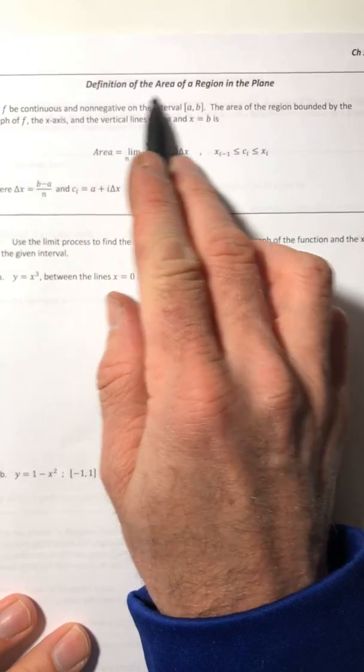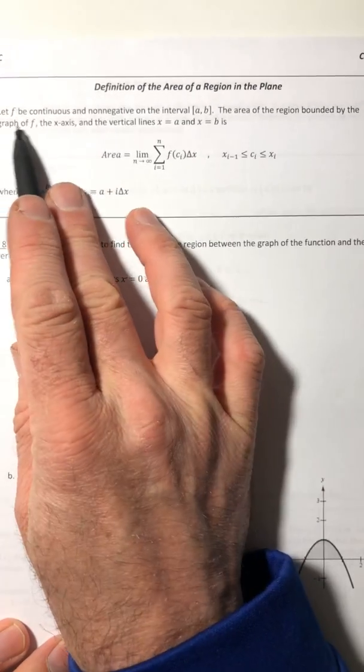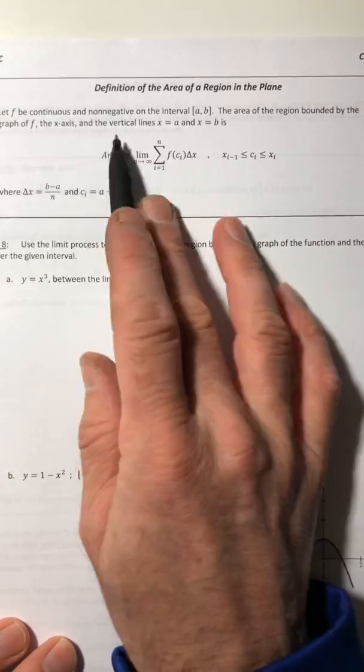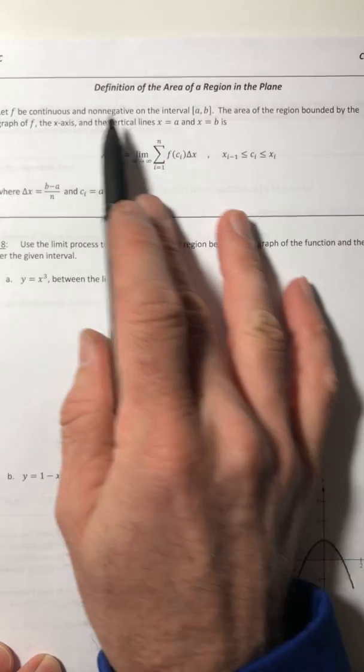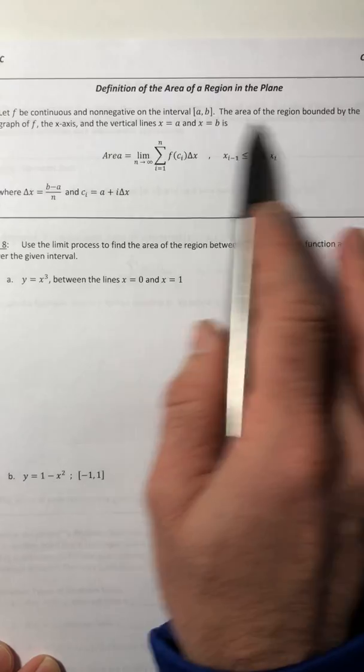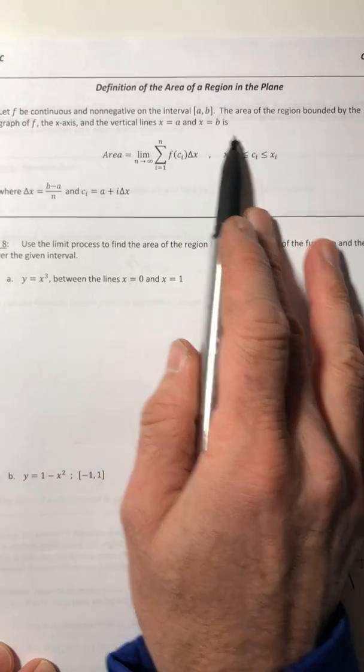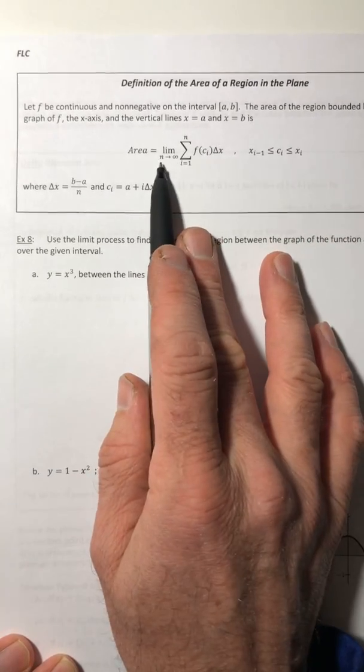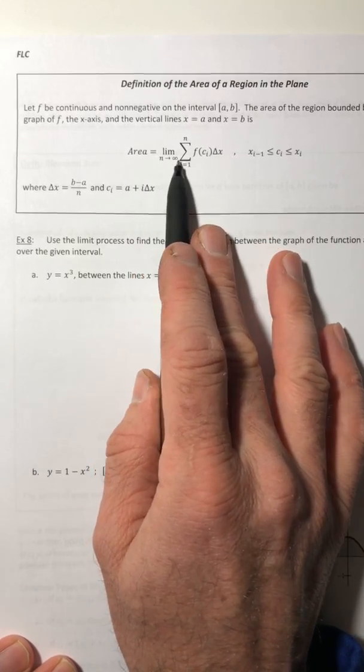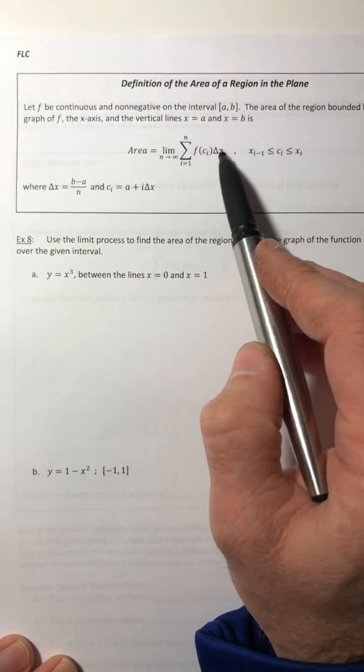The definition of the area of a region in the plane. Let F be continuous and non-negative on the interval from A to B. So that means F has no jumps, skips, vertical asymptotes, and it's above the x-axis. The area of the region bounded by the graph of F, the x-axis itself, and between x equals A and x equals B is this. It's practically that same notation that we just did. It's the limit as n goes off to infinity of the sum from 1 to n of F of C sub i times delta x.